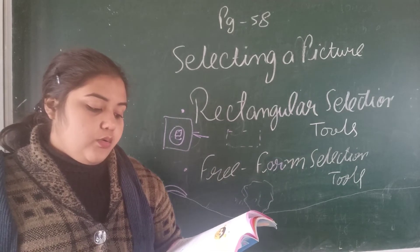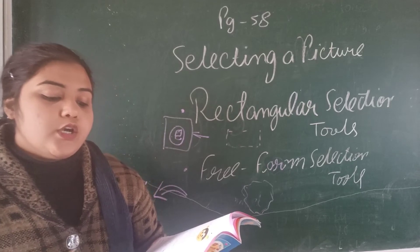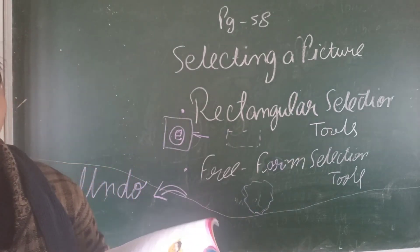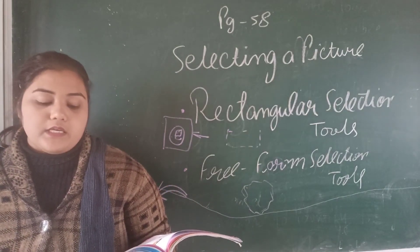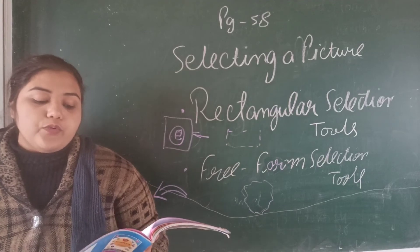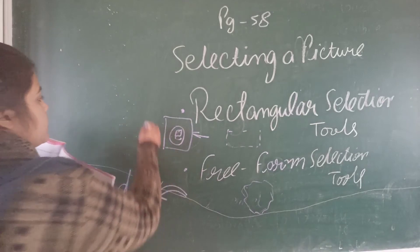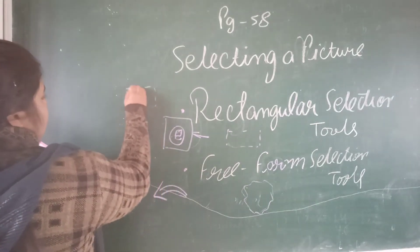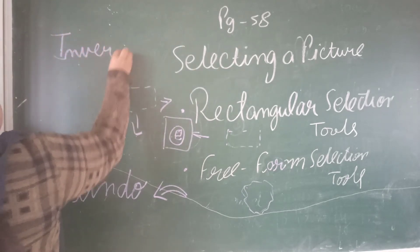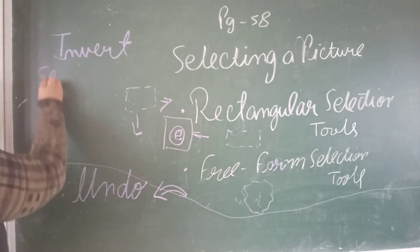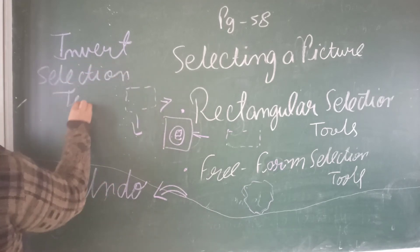The inward selection tool is used to select the area or object which has not been selected in the picture. Suppose some part of your picture is missing and you are not able to select that — for that you can use the inward selection tool. This is what the inward selection tool looks like.